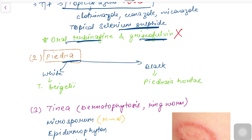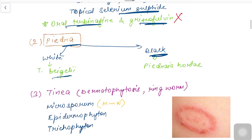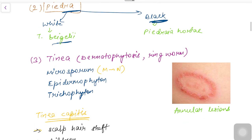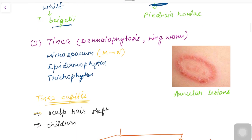Next is Piedra — it is not very important. There are two types: white piedra, caused by Trichosporon beigelii, and black piedra, caused by Piedraia hortae. That's all you need to remember.